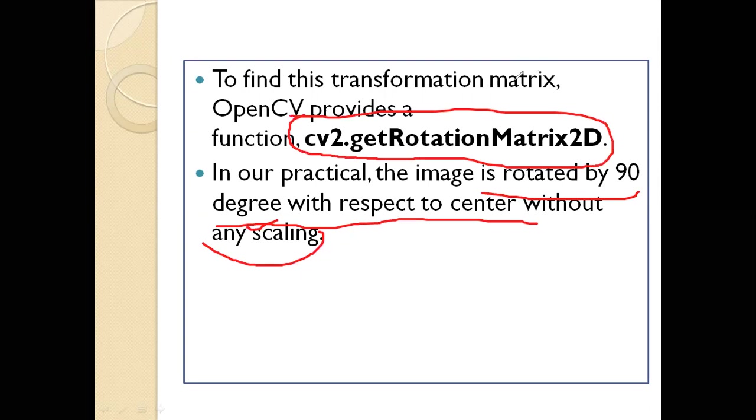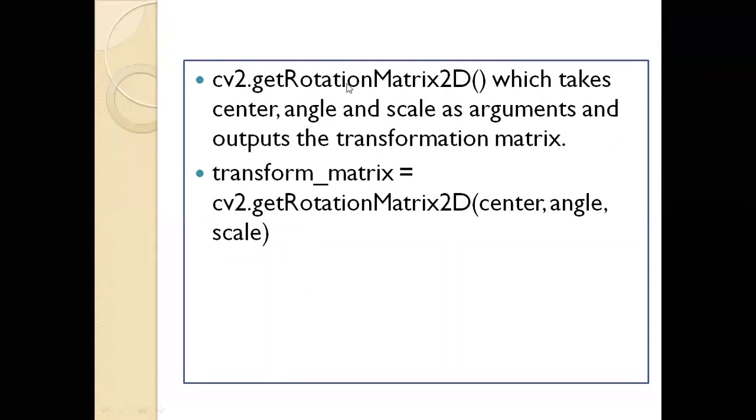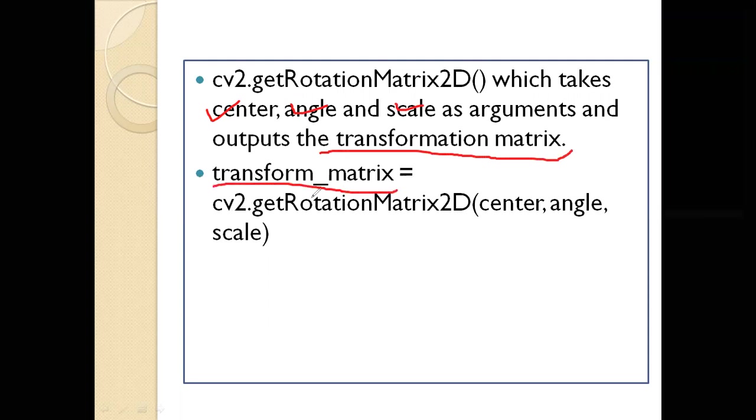cv2.getRotationMatrix2D takes center, angle, and scale as each argument, and it will output the transformation matrix. So transformation matrix M equals cv2.getRotationMatrix2D with the center, angle, and scale.